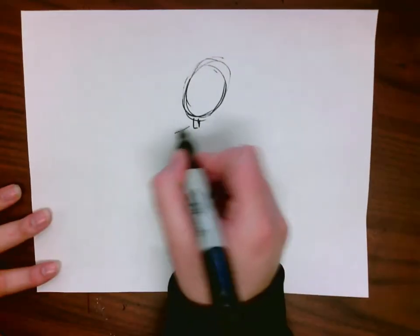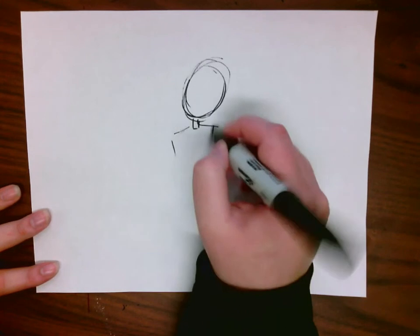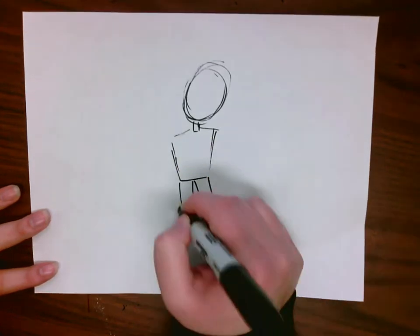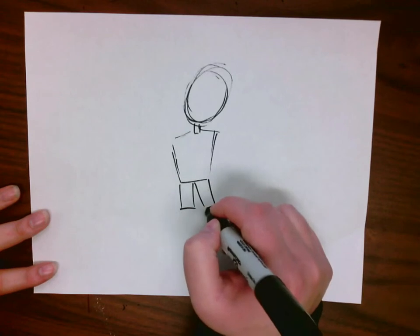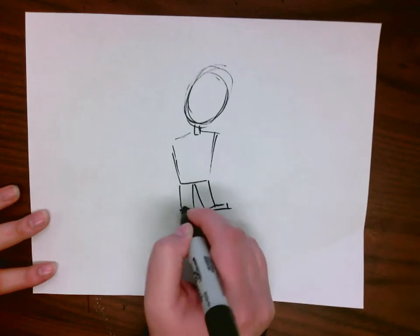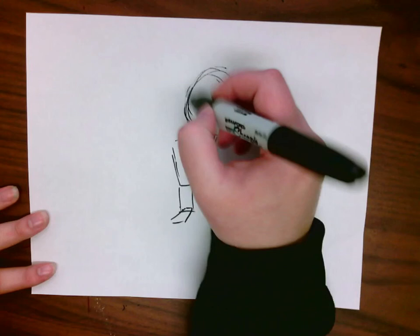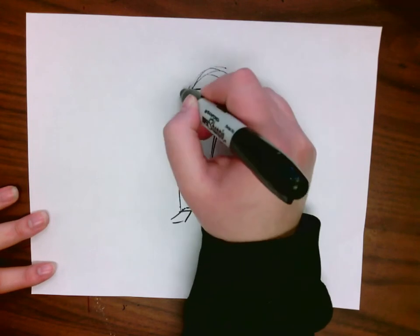So making the person have a giant head, making the person have this tiny little body, maybe have like the tiny little legs, okay? Feet that don't really make sense. You know, maybe they have this giant hat.